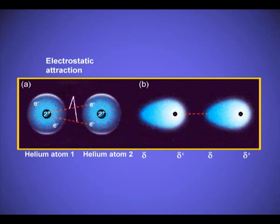You can see this in the picture. Helium atom 1 and helium atom 2 — the electrons are uniformly distributed in figure A. But accidentally in helium atom 1, all the electrons gather at one point, and it gets a partial negative charge while the other end gets a partial positive charge, shown by δ⁻ and δ⁺. This induces a temporary dipole in the neighboring helium atom, and then the partial positive and partial negative charges attract each other and hold the molecules together. This is London forces.